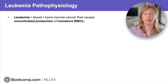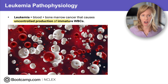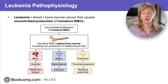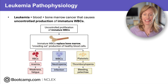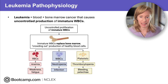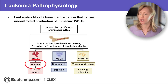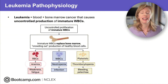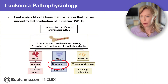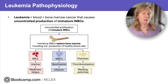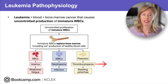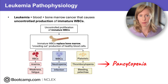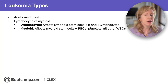Leukemia is a blood and bone marrow cancer that causes uncontrolled production of immature white blood cells. That proliferation of immature WBCs crowds out production of healthy blood cells, so we see a decrease in red cells, white cells, and platelets. Decreased red blood cells — anemia — causes weakness and fatigue. Decreased white blood cells — neutropenia — puts them at risk for infection. Decreased platelets — thrombocytopenia — increases their risk for bleeding. When all three are low together, that's called pancytopenia.